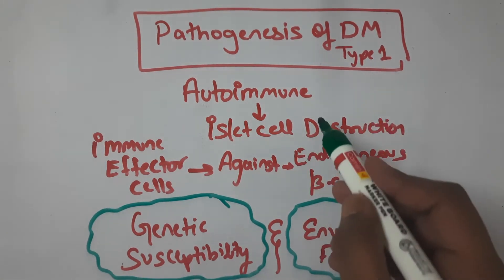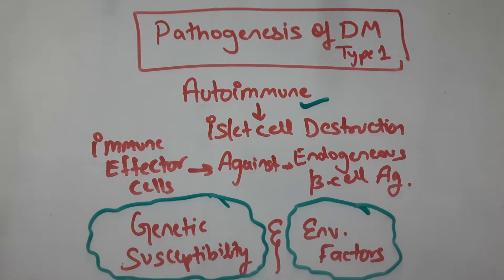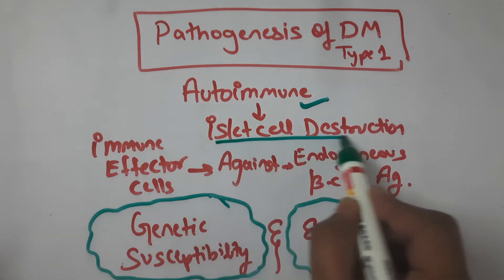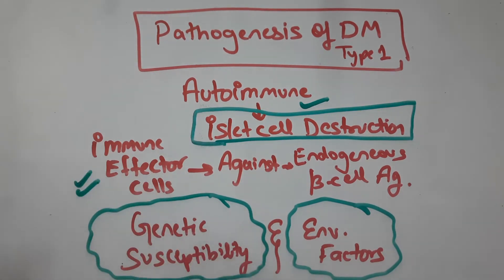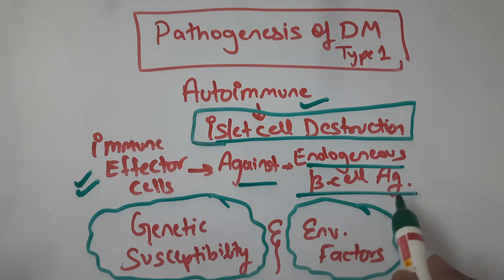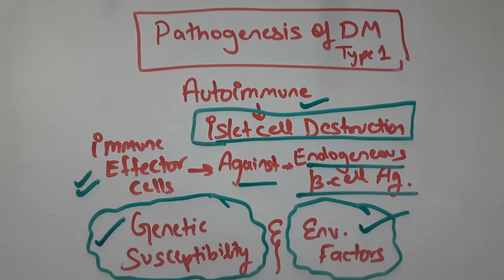Type 1 diabetes mellitus is an autoimmune disease, meaning our own body's antibodies or immune cells will destroy our body's own tissues or endogenous antigens. In this case, there is islet cell destruction by our own immune effector cells acting against the endogenous beta cell antigen, thereby damaging the beta cells and causing decreased insulin. The pathogenesis of Type 1 diabetes is an interplay of two factors: genetic susceptibility and environmental factors.